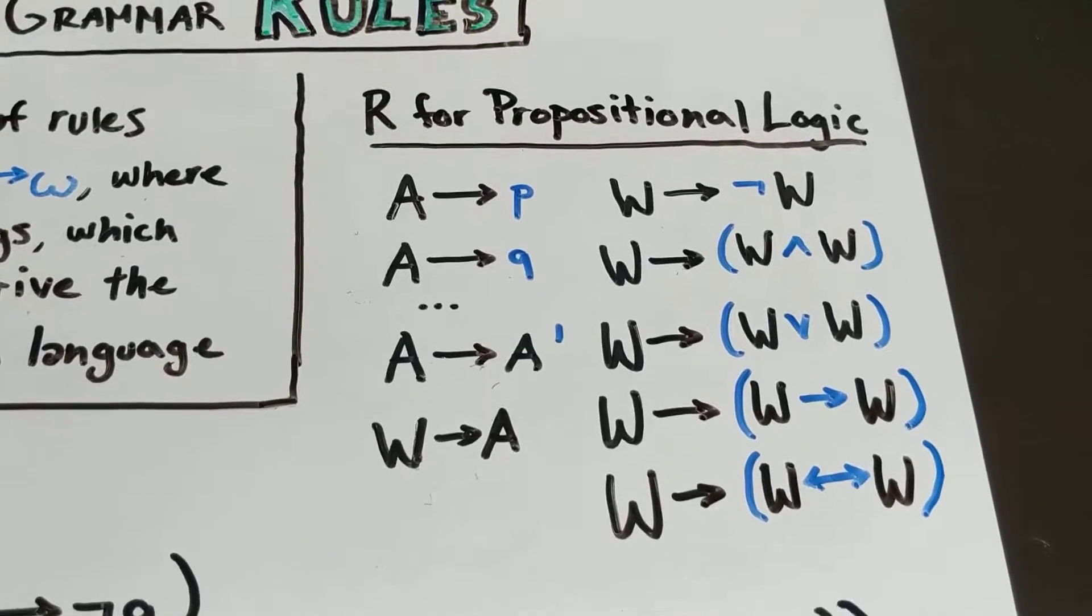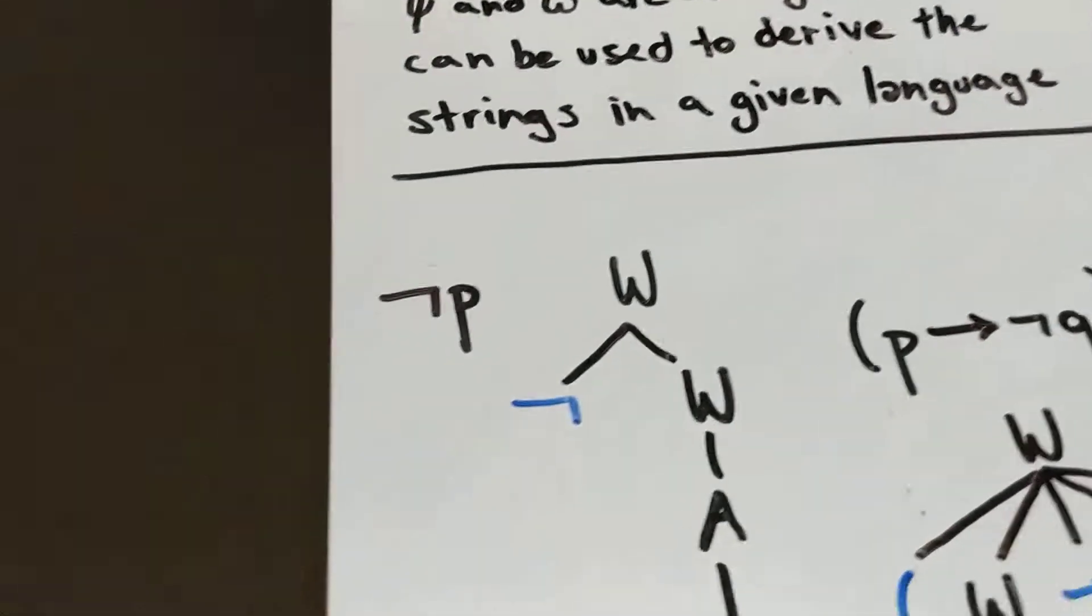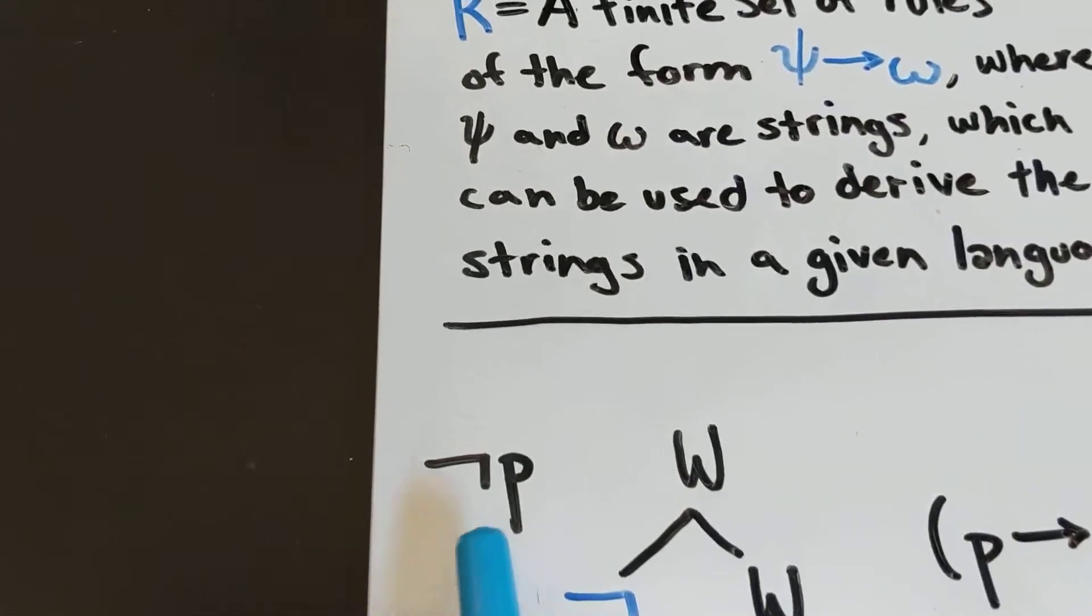So let's look at how we can do this in sort of a flowchart form. So here we have an expression, not P.